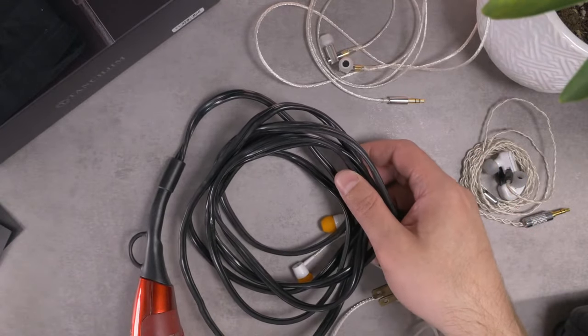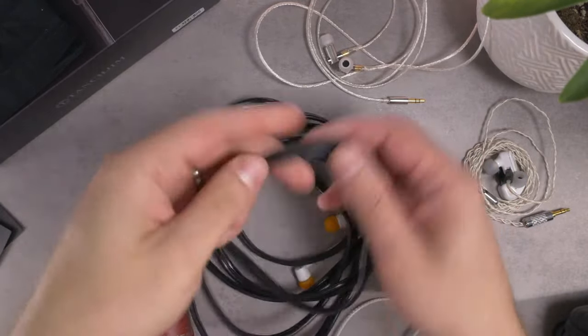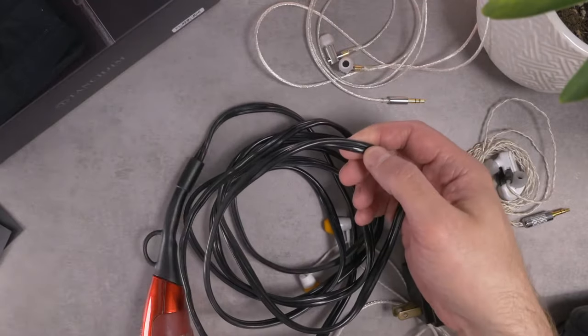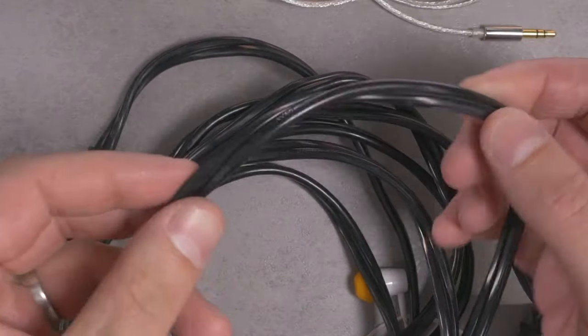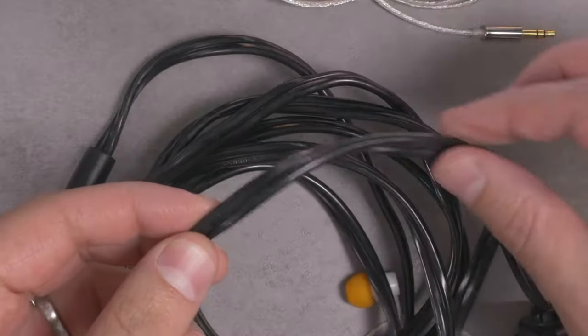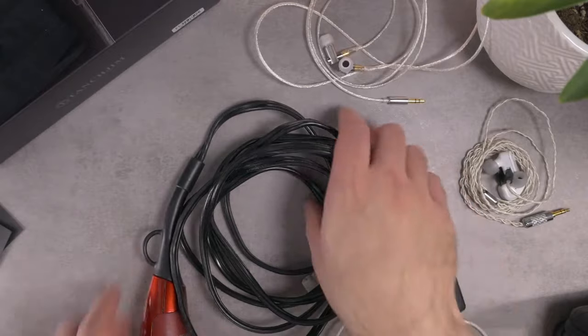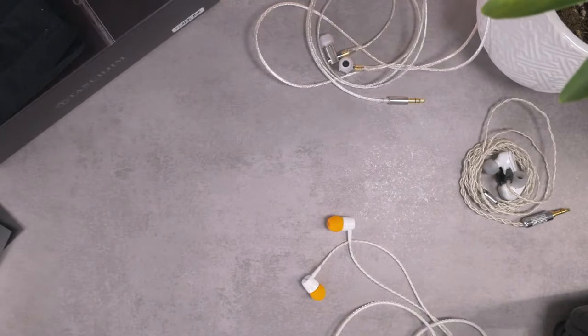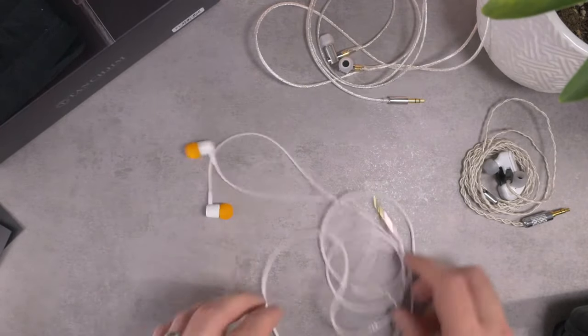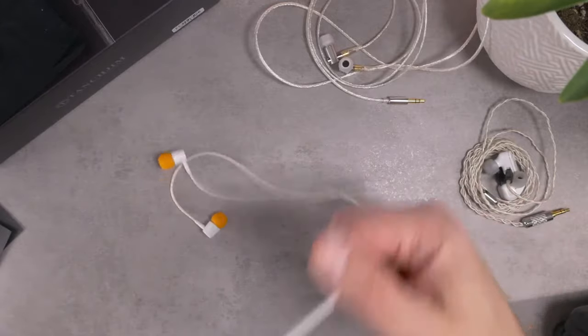I'm going to show you my hair dryer cable. This is just an old hair dryer that I use for actually bending ear hooks on my IEMs. You can kind of see that the cable itself is just kind of warped because the way that it was wrapped up for years and years and years of use was very similar to what I just showed you with that MH755 cable.